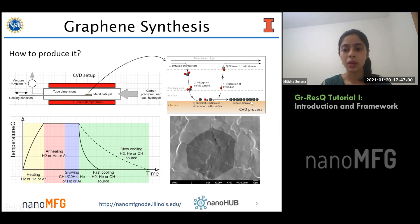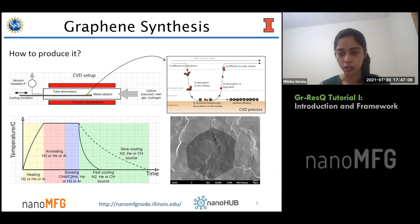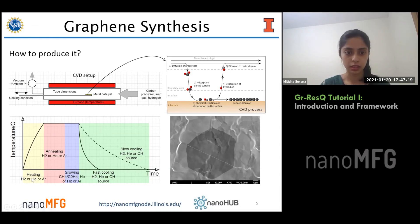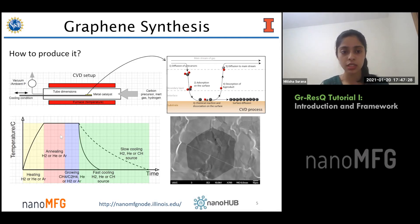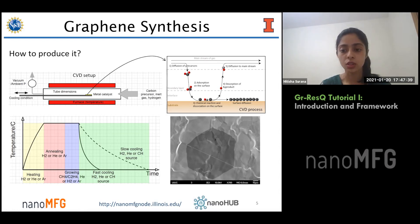Once graphene is formed, we analyze it using scanning electron microscopy and Raman spectroscopy. There is also a time-temperature cycle: first, we heat the metal catalyst, then anneal it at a very high temperature — typically 1000 to 1100 degrees Celsius — then introduce the carbon precursor, and finally cool the substrate down to room temperature. This whole process of manufacturing graphene using CVD is called a recipe.